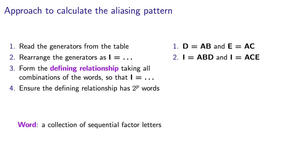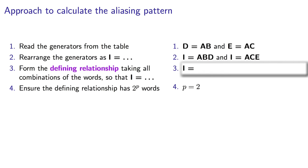So, remember in our example, we have p equals 2. So, we should have 2 to the 2, in other words, 4 words in our defining relationship. And the first one is I. So, where are the other three?